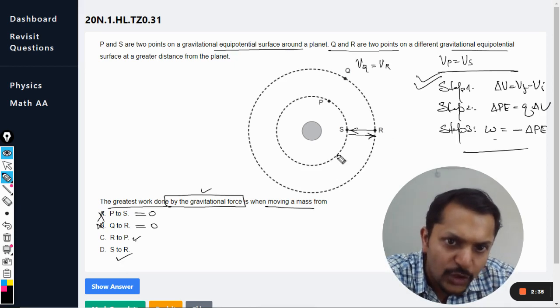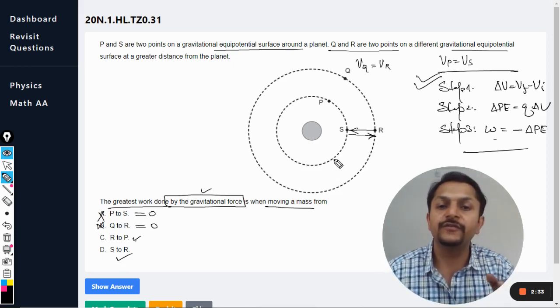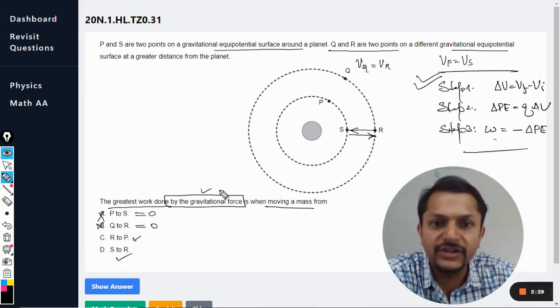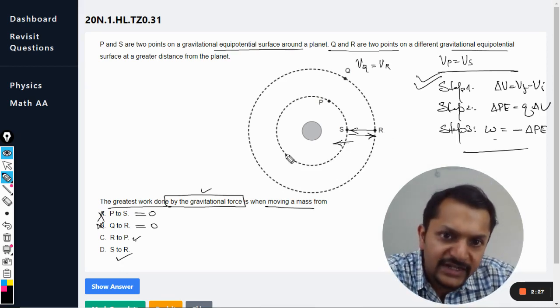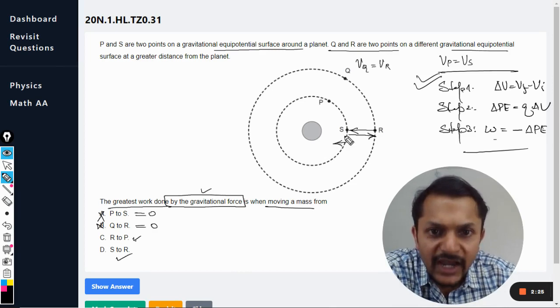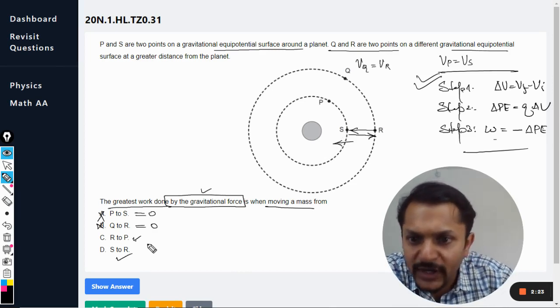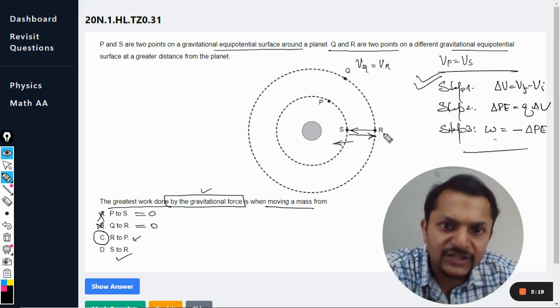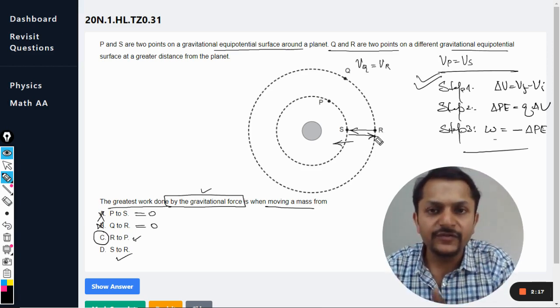So now we are interested in work done by the gravitational force. So gravitational force is always acting downwards, so it would be positive in the case of R to S, so R to P it would be positive. And in S to R, the gravity work done by gravity will be negative because gravity is attracting it downwards.